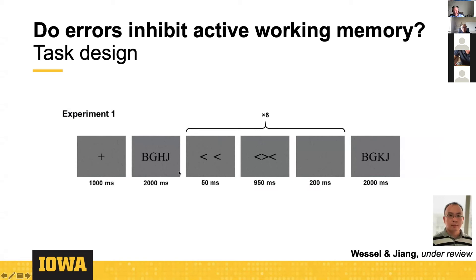We have three conditions of interest: a purely congruent condition where all six trials in the delay interval are congruent; an incongruent condition where half the trials contain incongruent stimuli where the target mismatches the response cued by flankers; and within the incongruent trials, we compare trials where participants made errors on any of the six responses to trials with incongruent stimuli but no errors. This allows us to investigate whether action errors — rather than just conflict — reduce working memory representations.